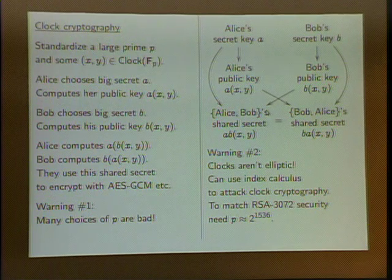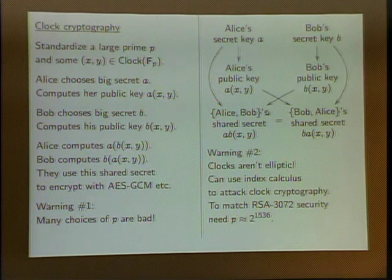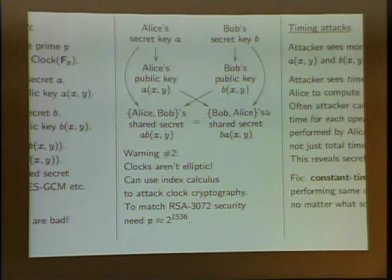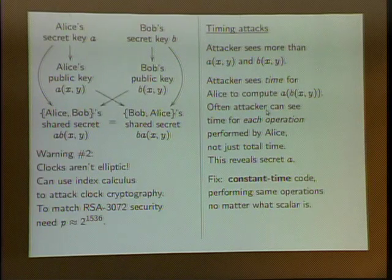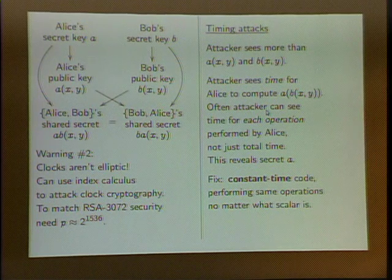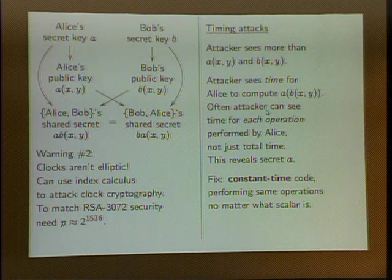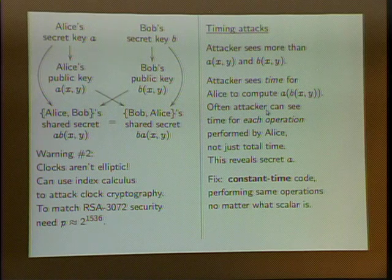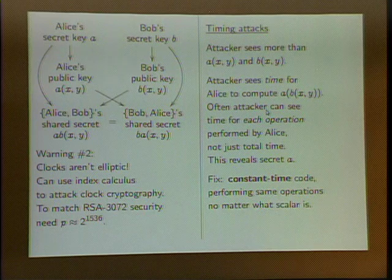To get good security for a clock, if you want RSA-equivalent 3000-bit security, you need a prime with about half that many bits — around 1536 bits for RSA-3072 equivalent. There's still another problem even with a good prime: timing attacks. When computing n times a point, different operations happen depending on whether n is even or odd, which changes the pattern of operations and the time taken — leaking information about your secret number n.